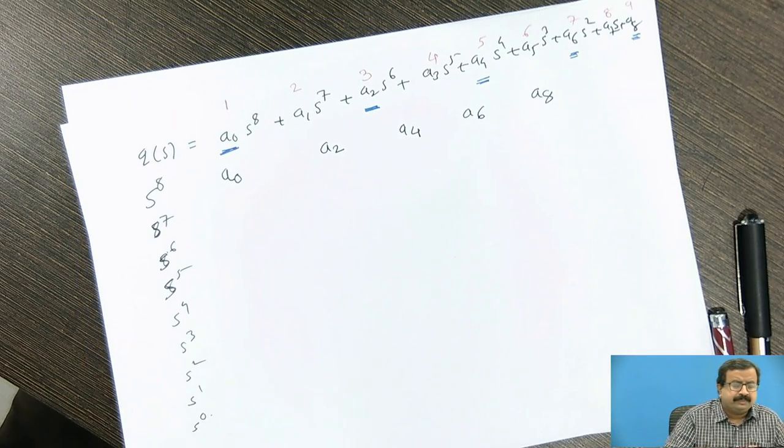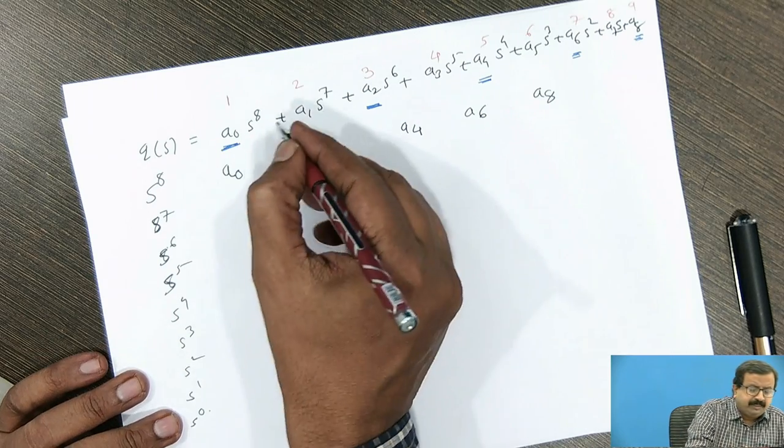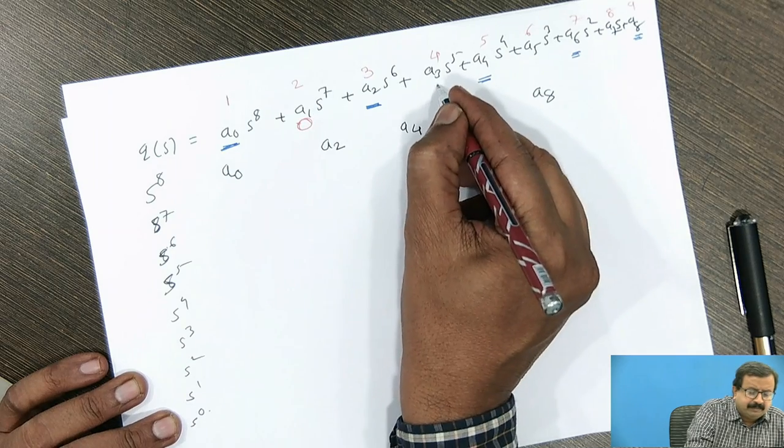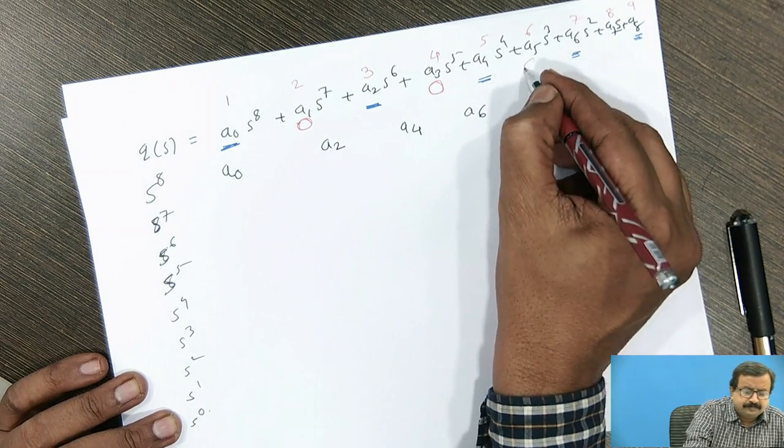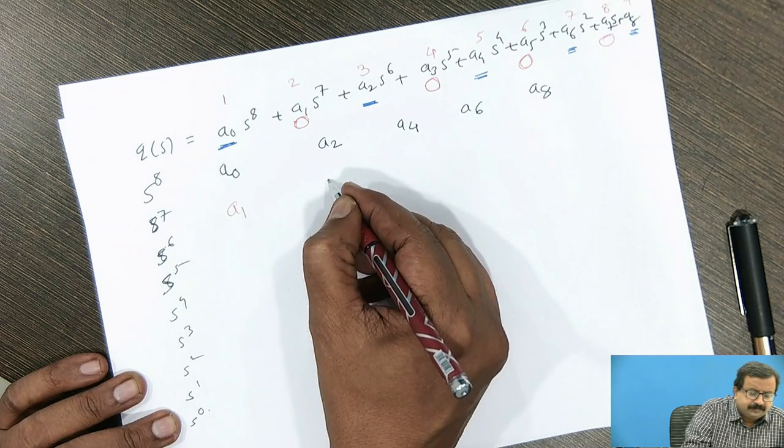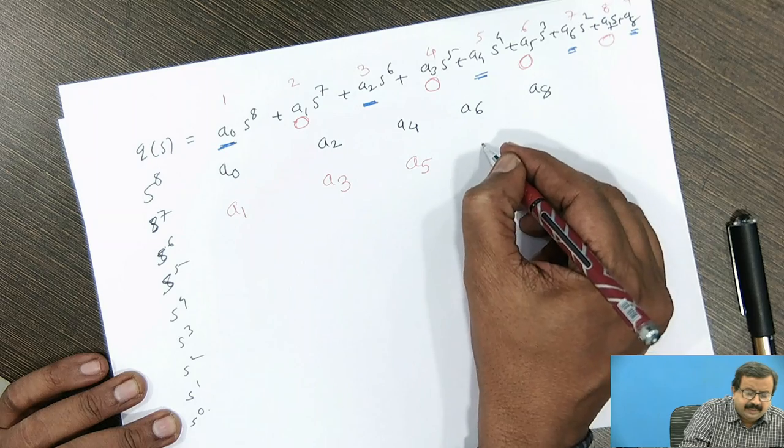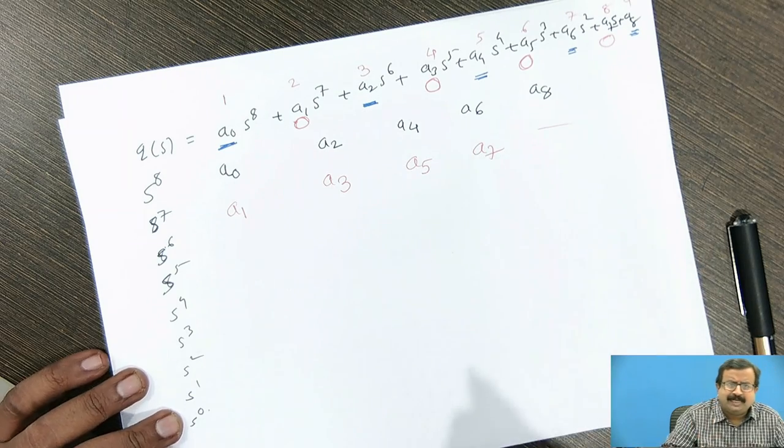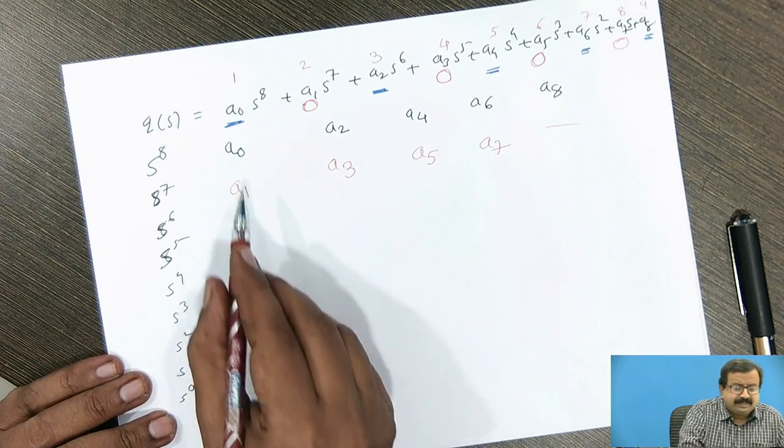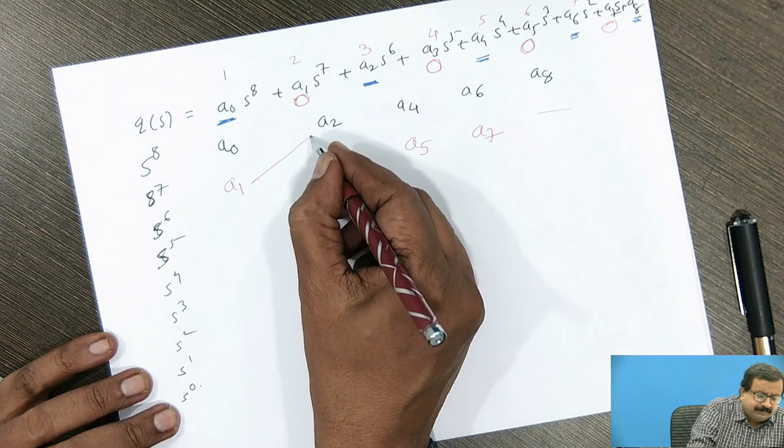Then I will tell you, then you write down the even number terms. So these are the even number terms, I will make them circle, even number terms. Okay, so they are a1, a3, a5 and a7. When it is not there, you can just put a dash or you can take it at 0 for your calculation.